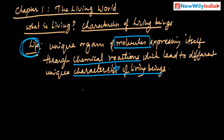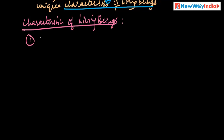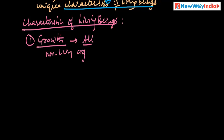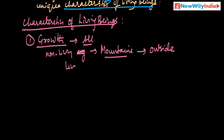Biology is defined based on the characteristics of living beings. There are around eight characteristics of living beings. The first one is growth. This is the main clear difference from non-living organisms. All living organisms exhibit growth. Sometimes non-living objects also grow — for example, mountains, which are very clearly visible — but the growth is different.